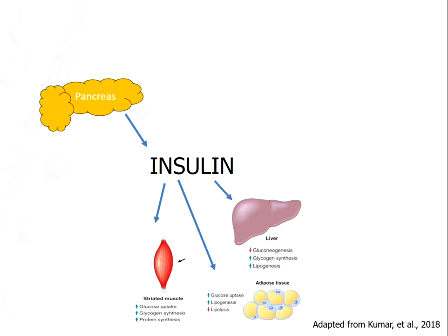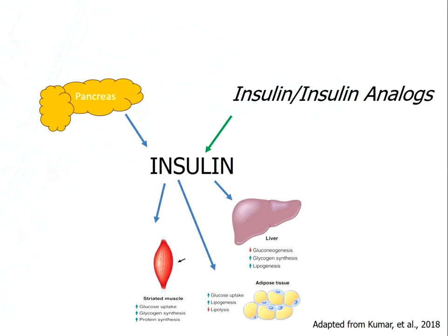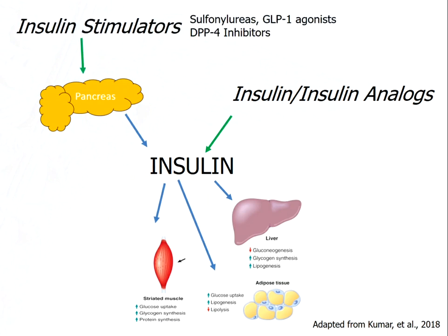In managing diabetes, if the pancreas senses the increase in blood glucose and releases insulin that acts on peripheral tissues, one thing we can do is use insulin or insulin analogs to replace or augment the insulin being produced by the body. Particularly in people with type 1 diabetes, that's the mainstay of therapy — those people may have insulin pumps that frequently adjust the amount of insulin being released based on the amount of blood glucose. We also use insulin in type 2 diabetes, but we have a couple of other medical strategies that we can use before we get to that point. We have drugs that can increase the production of insulin — we can call those insulin stimulators.